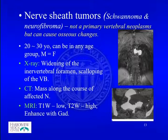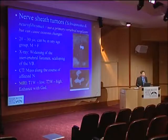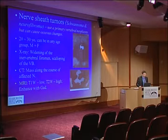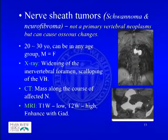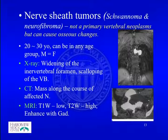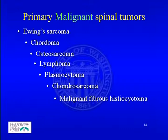Nerve sheath tumors, including schwannoma and neurofibromas, are technically not primary vertebral neoplasms but can cause osseous changes. They typically occur at age 20 to 30 but can present in any age group. X-ray can show widening of the intervertebral foramen and scalloping of the vertebral body, while CT scan shows masses along the course of the affected nerve.